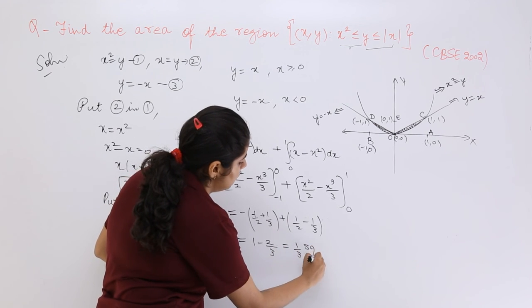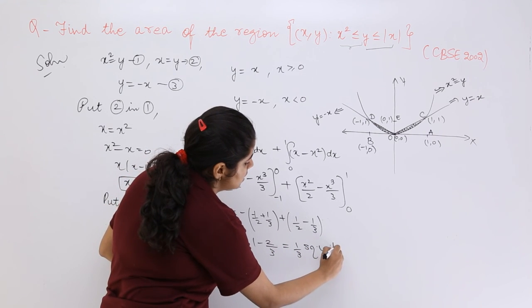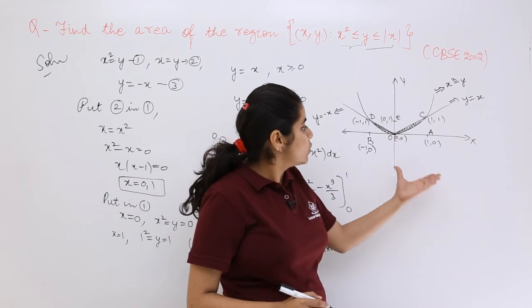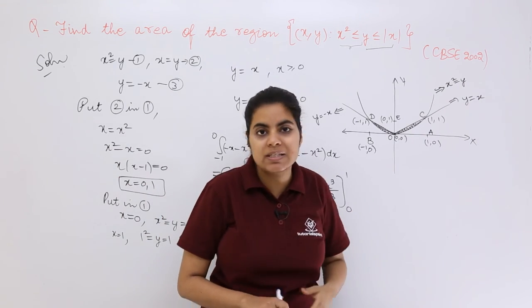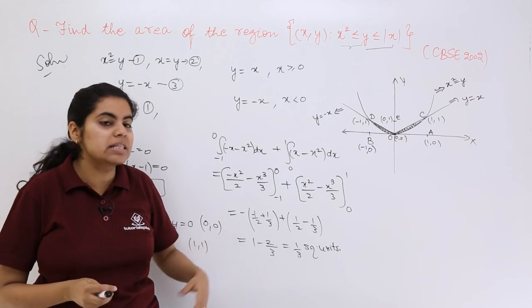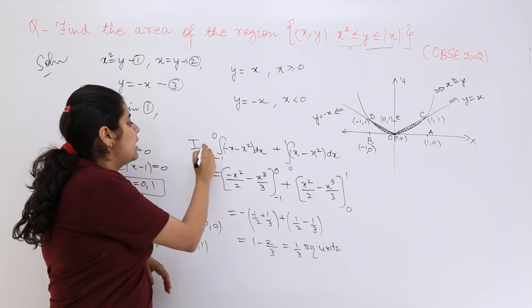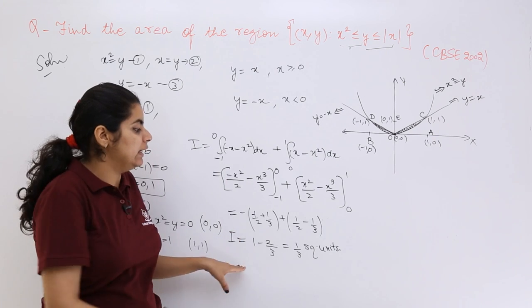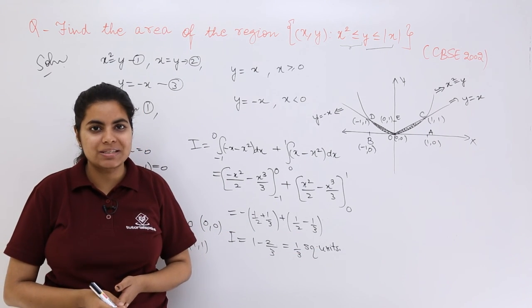So the answer should be 1/3 square units. And that is how you solve this. So first we found out the points of intersection, and then we move for the further part of the solution here in the form of integral. So this is my integral, and this is also my integral. And that is the answer: 1/3 square units.